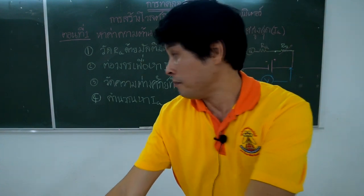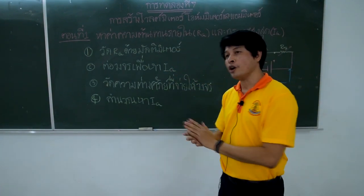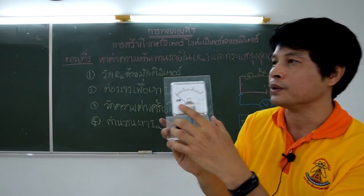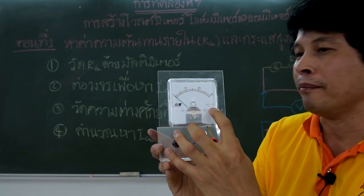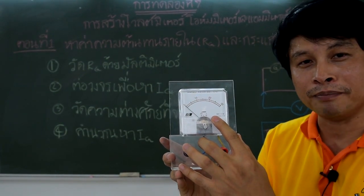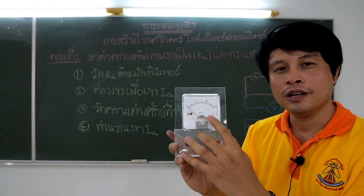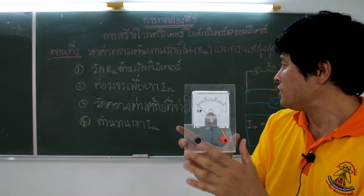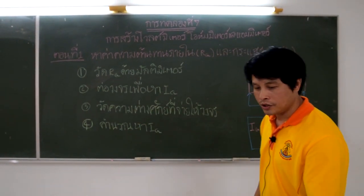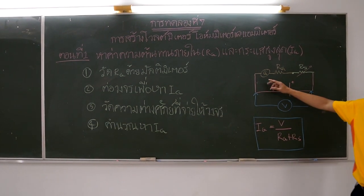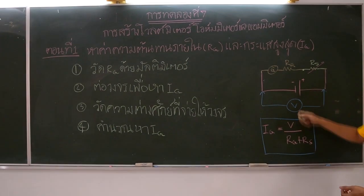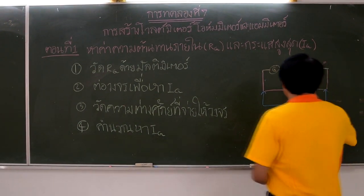Then we move to the next step: connect the circuit to find IG, the full-scale current of the galvanometer. To construct a voltmeter and ammeter, you need to know the full-scale current of the galvanometer. Connect the circuit to control the current passing through the galvanometer, then we can find the full-scale current. Look at the circuit diagram.